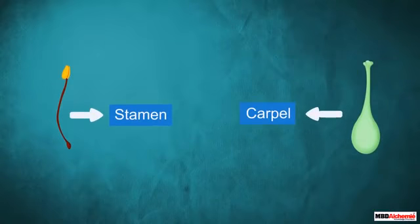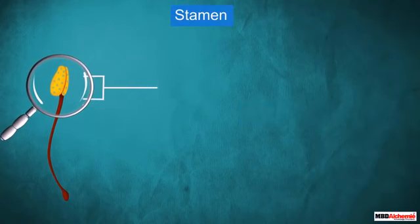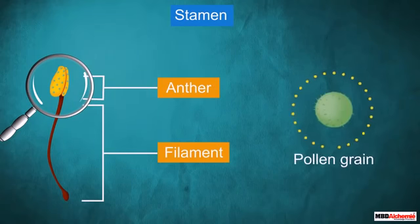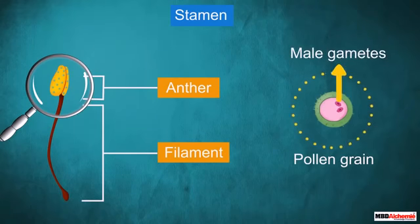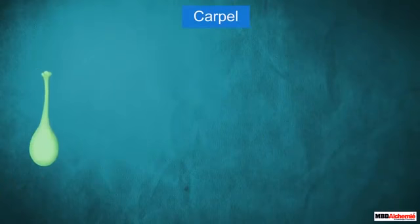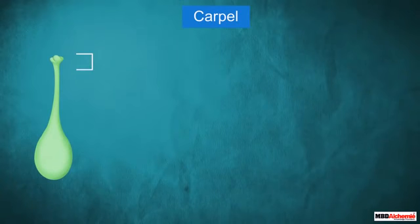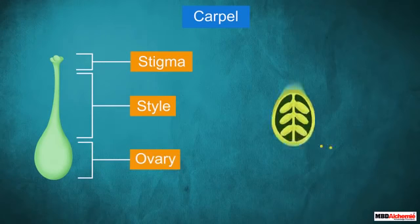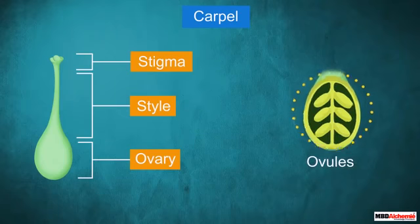Now let us know about the different parts that make up a stamen and a carpel. A stamen is made of two main parts: anther and filament. The anther produces pollen grains, and it is the pollen grain that contains the male gametes. A carpel on the other hand is made up of three parts — the terminal part is called the stigma, the middle elongated part is the style, and the swollen bottom part is the ovary.